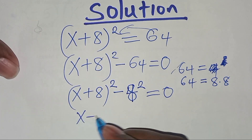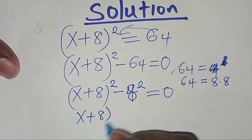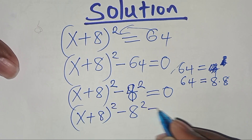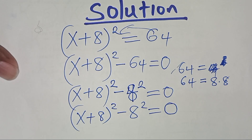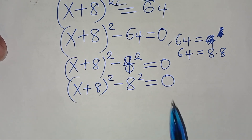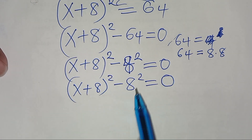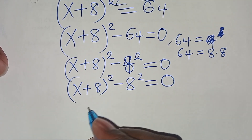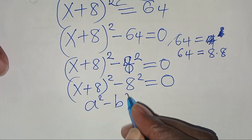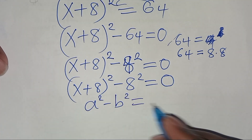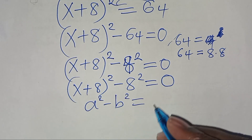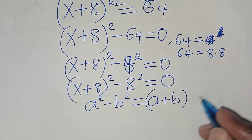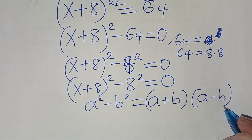We can see this is x plus 8 to the power 2, subtract 8 to the power 2, equal to 0. We find that this is actually in the form of a squared minus b squared, which is the difference of two squares, expressed as a plus b, times a minus b.